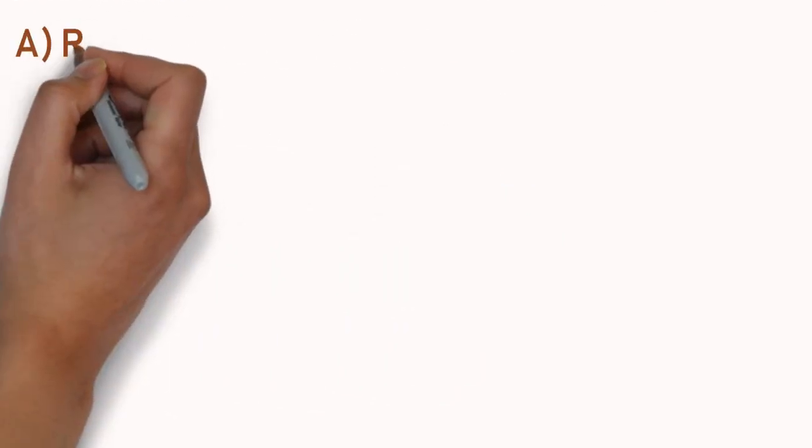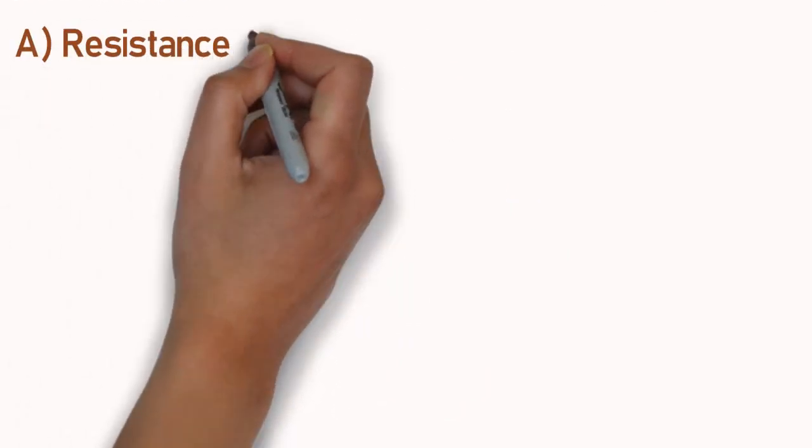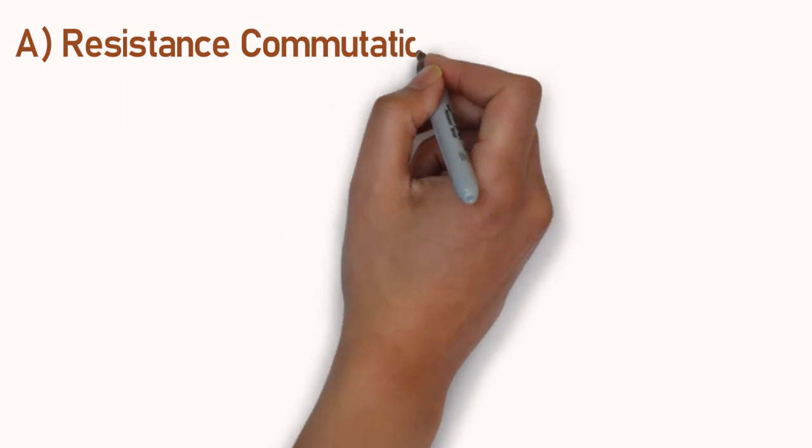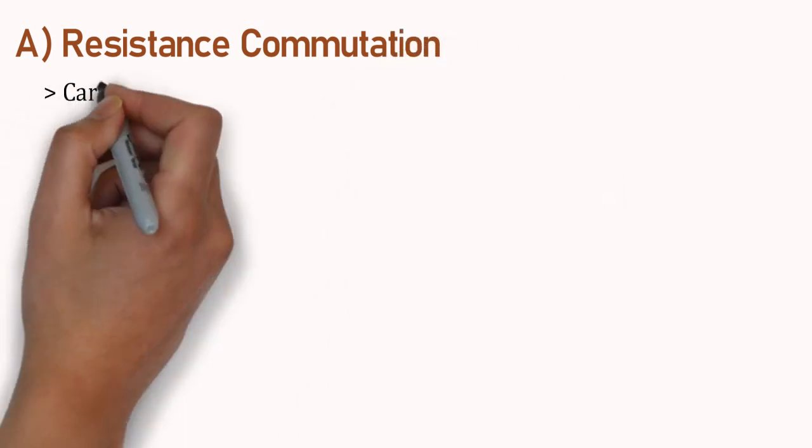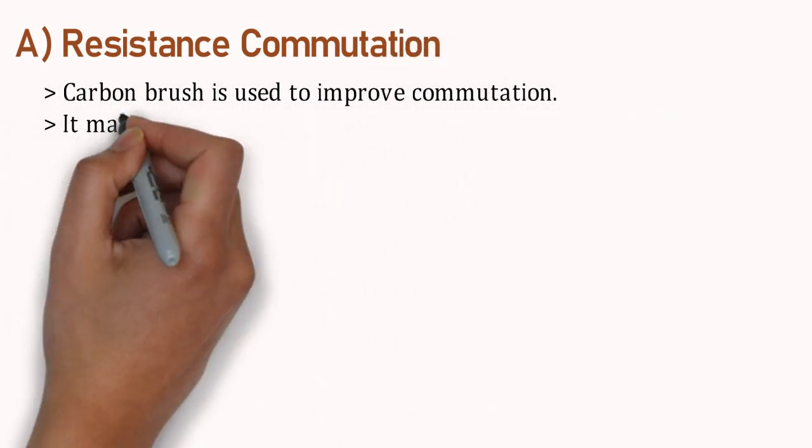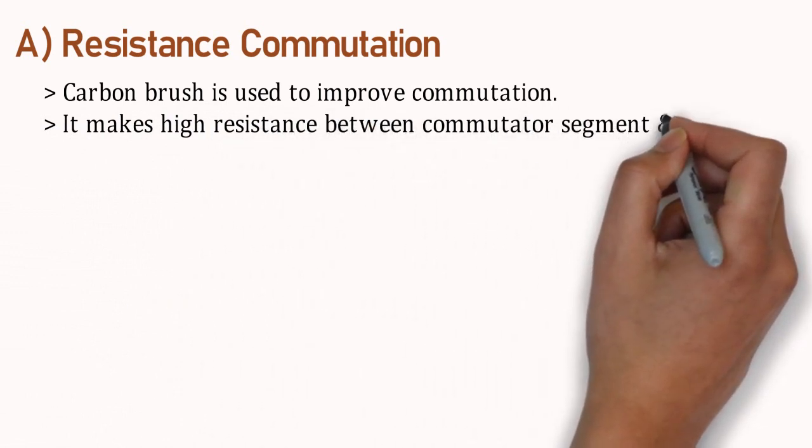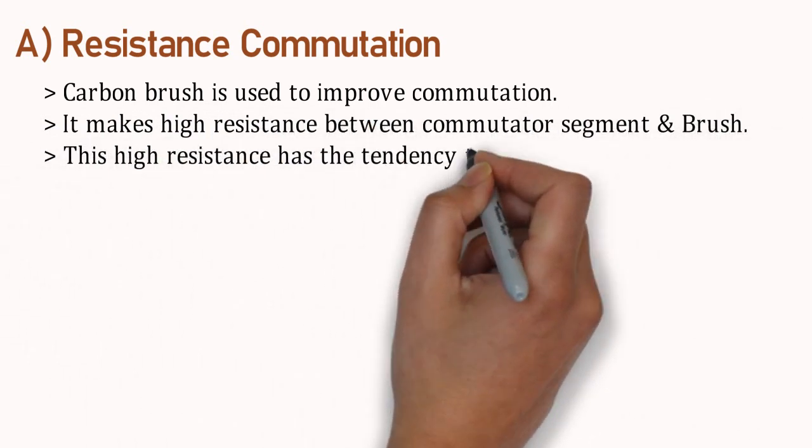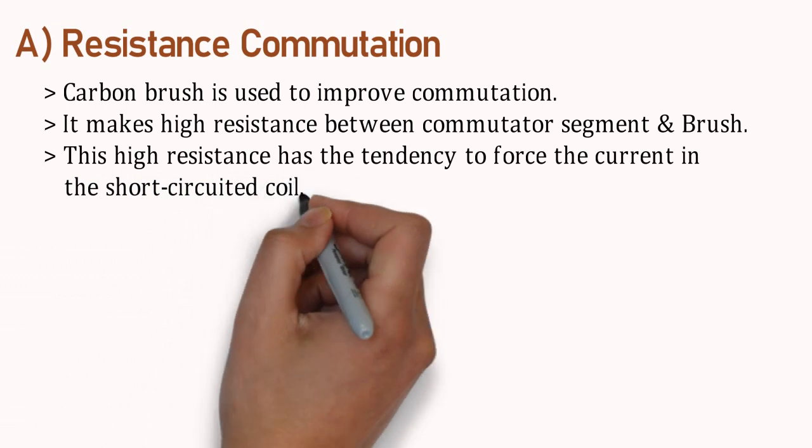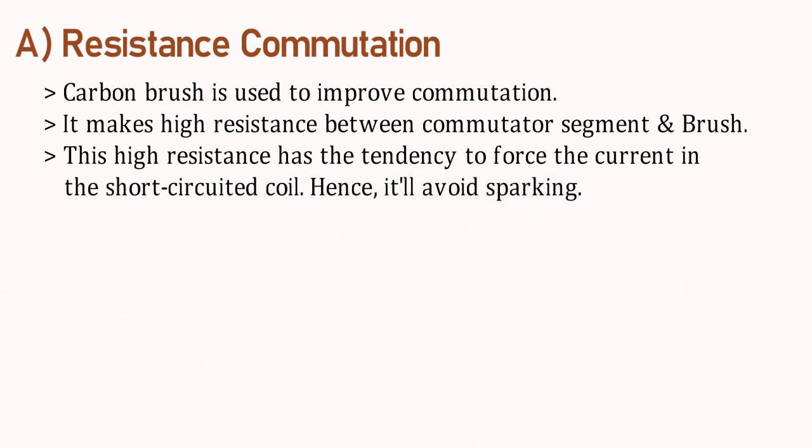First is resistance commutation. In this, carbon brush is used to improve commutation. It makes high resistance between commutator segment and brush. This high resistance has the tendency to force the current in short circuited coil. Hence, it will avoid sparking.